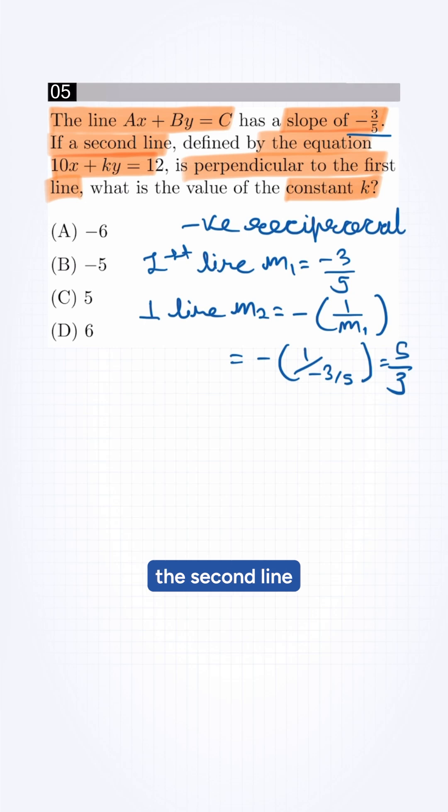We need to find the second line's slope in terms of k. The second line is in the form ax plus by equals c, so m value will be minus a by b. Putting the values, m2 will be minus 10 by k.